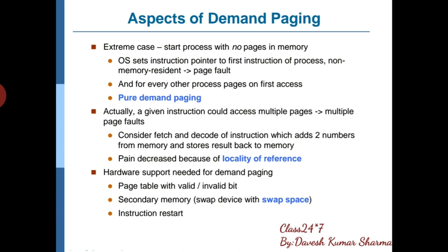Locality of reference क्या होता है — given instruction could access multiple pages, multiple page faults। Suppose एक particular instruction है जो बहुत सारे multiple pages को एक साथ access कर रहा है — तो बहुत सारे page faults होने लग जाएंगे। Fetch and decode of the instruction वहाँ पर start हो जाएगा और एक concept आएगा — locality of reference — जो decide करेगा कि कौन सा page किस locality को block कर रहा है। जैसे globally available variable और locally available variable होता है — तो locality of reference से ही decide होगा कि किस page को replace करना है और किसको main memory में रहने देना है।